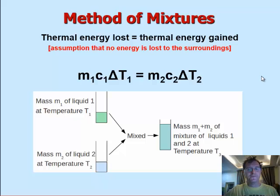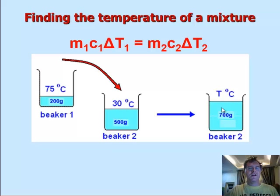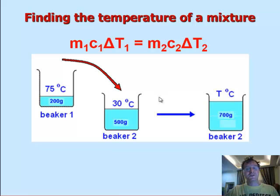So let me show you an example of this. I'm going to mix 200 grams of water at 75 degrees and 500 grams at 30 degrees centigrade. When I mix them together I get 700 grams in total. In this situation I know that the specific heat capacity for both of these samples is going to be 4200 joules per kilogram per kelvin. The question is what is the final temperature going to be? The change in temperature 1 is going to be 75 degrees minus the unknown final temperature, and the change in temperature for sample 2 is going to be the final temperature minus 30 degrees. Rearranging, you should come out with a final temperature of 43 degrees Celsius.